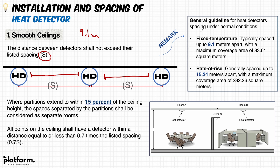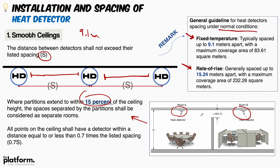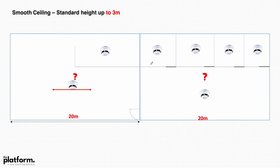The general guideline for heat detector spacing under normal conditions with a smooth ceiling — referred to by NFPA 72 — applies to both fixed temperature and rate of rise types. For partitions, the same rule as smoke detectors applies from previous lectures: the 15% rule for determining whether to provide a heat detector in each partition or treat the area as one space. The standard maximum installation height for heat detectors is 3 meters.